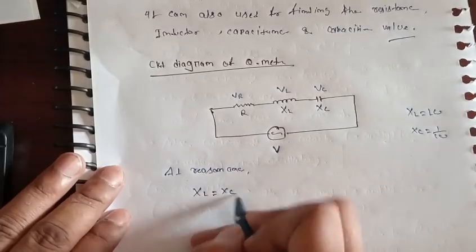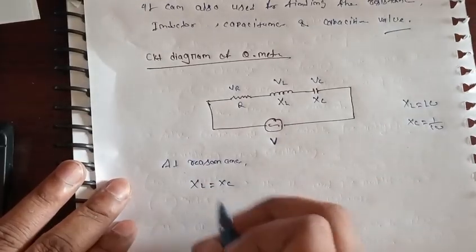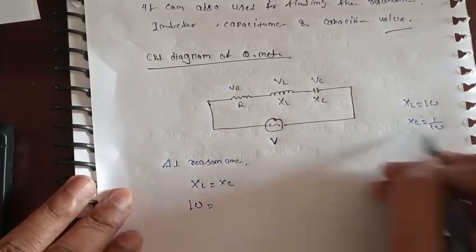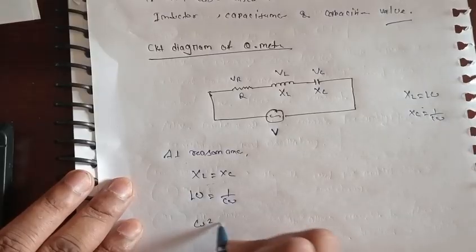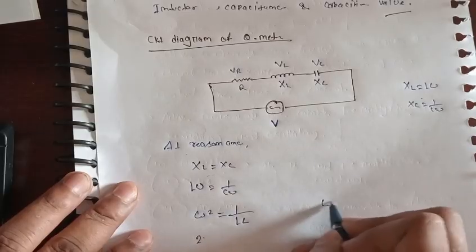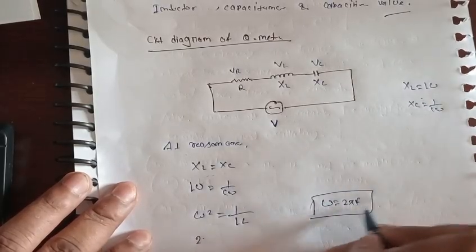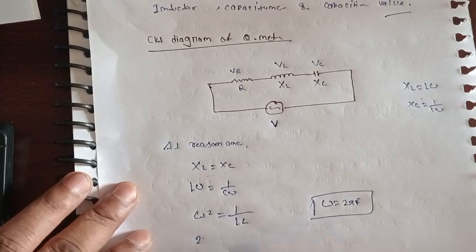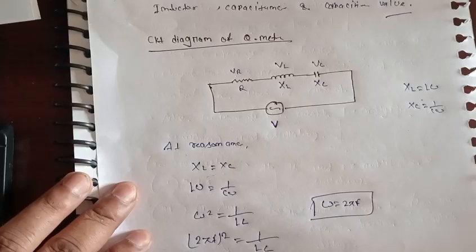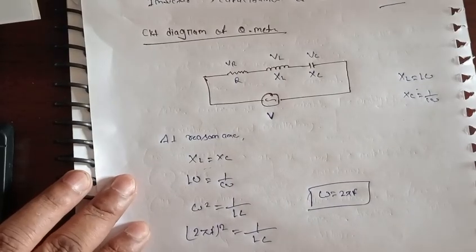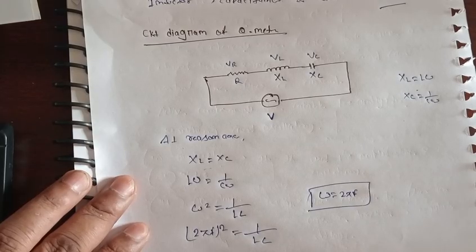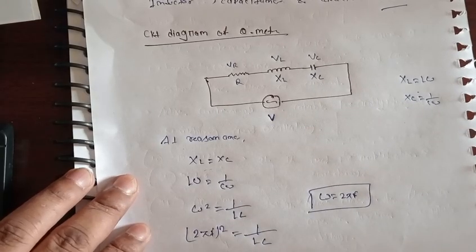At resonance, we know that XL is equal to Xc. XL is equal to L omega and Xc is equal to 1 by C omega. Then omega squared is equal to 1 by LC. Since omega is equal to 2 pi F, then 2 pi F squared is equal to 1 by LC. Therefore F is equal to 1 divided by 2 pi under root of LC. This is the resonant frequency of the Q-meter.